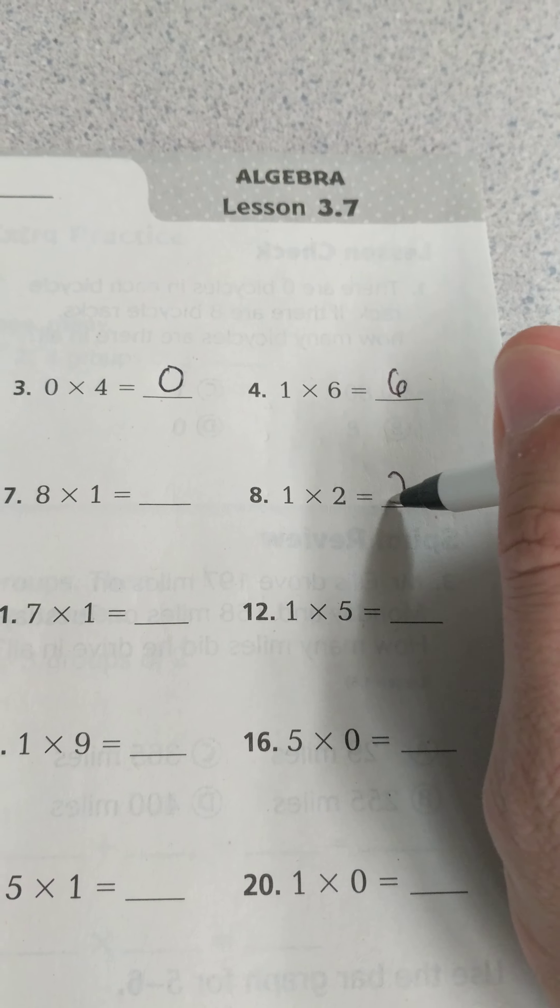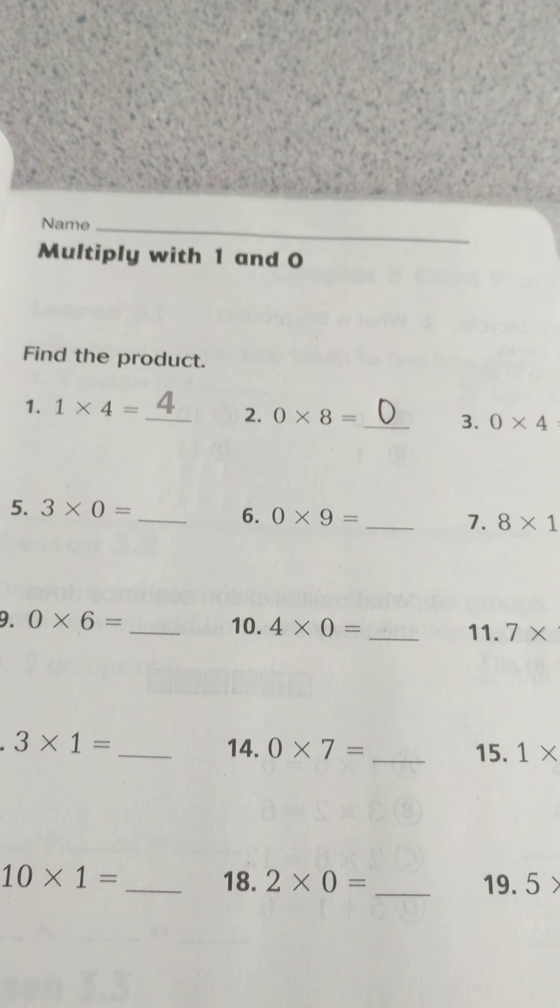1 times 2 will equal 2, and that is how we multiply with 1 and 0.